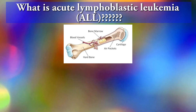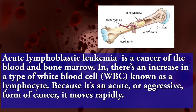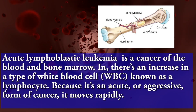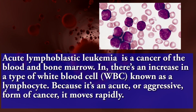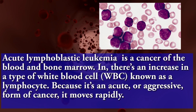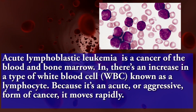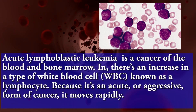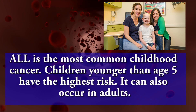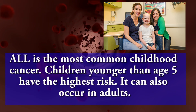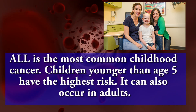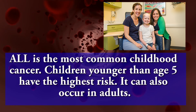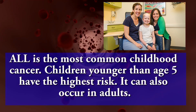What is acute lymphoblastic leukemia? Acute lymphoblastic leukemia is a cancer of the blood and bone marrow. In acute lymphoblastic leukemia, there is an increase in a type of white blood cell known as a lymphocyte. Because it is an acute or aggressive form of cancer, it moves rapidly. Acute lymphoblastic leukemia is the most common childhood cancer. Children younger than age 5 have the highest risk, though it can also occur in adults.